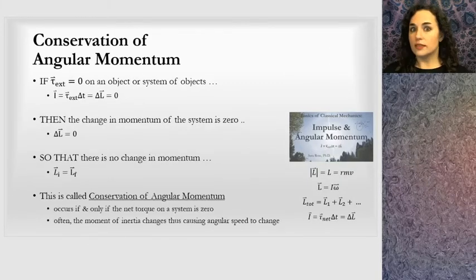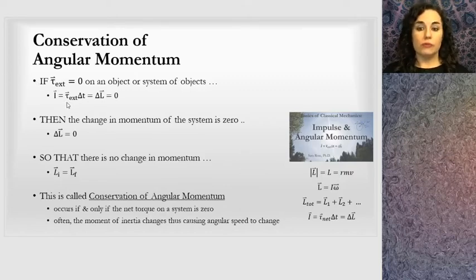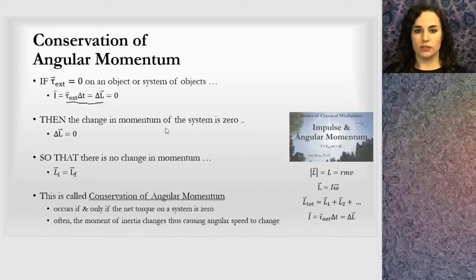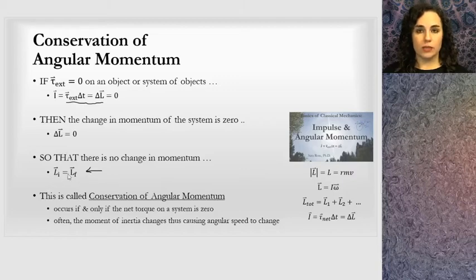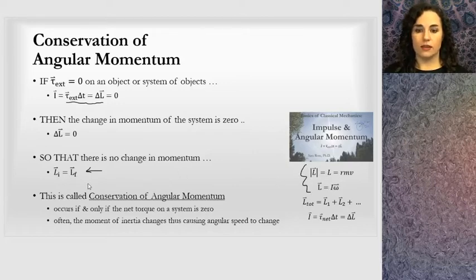Just like we can do this linearly, we can also do this rotationally. If we apply a torque for a certain amount of time, that causes a change in angular momentum, as we saw in the lesson prior to this one. If there's no external torque — no net torque on a system from the outside — then there's no change in angular momentum, and we can say that the initial angular momentum is equal to the final angular momentum. We have several equations to calculate angular momentum.